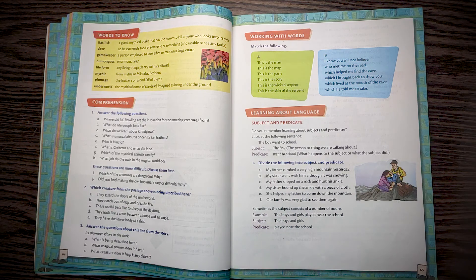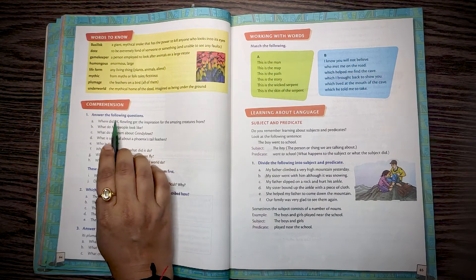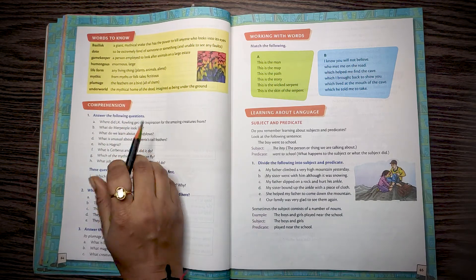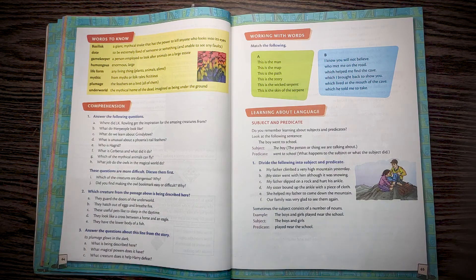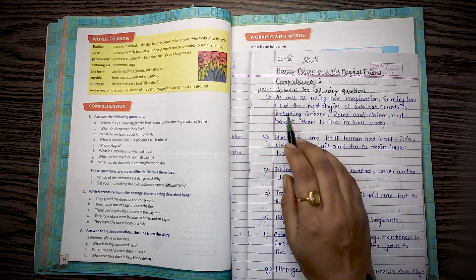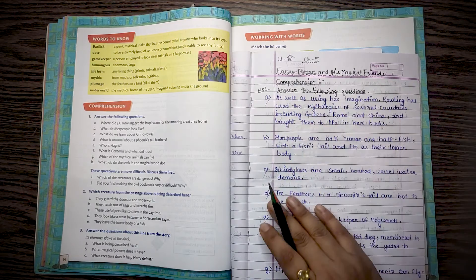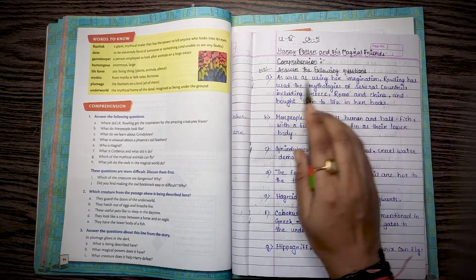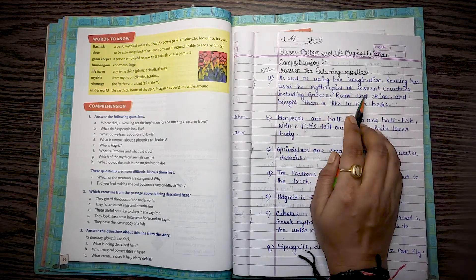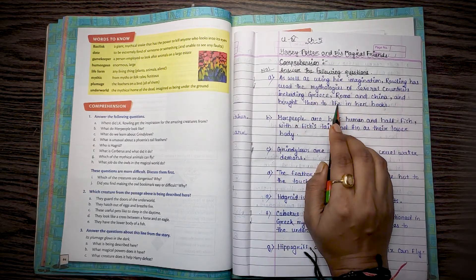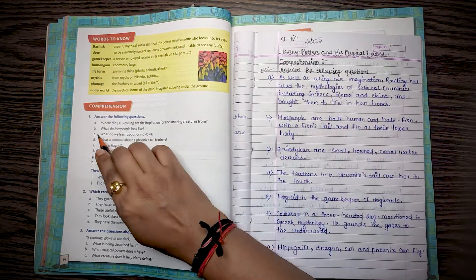Let's start Comprehension Number 1, answer the following questions. Question A: Where did JK Rowling get the inspiration for the amazing creatures from? The answer is clear. As well as using her imagination, Rowling has used the mythologies of several countries including Greece, Rome and China and brought them to life in her books.